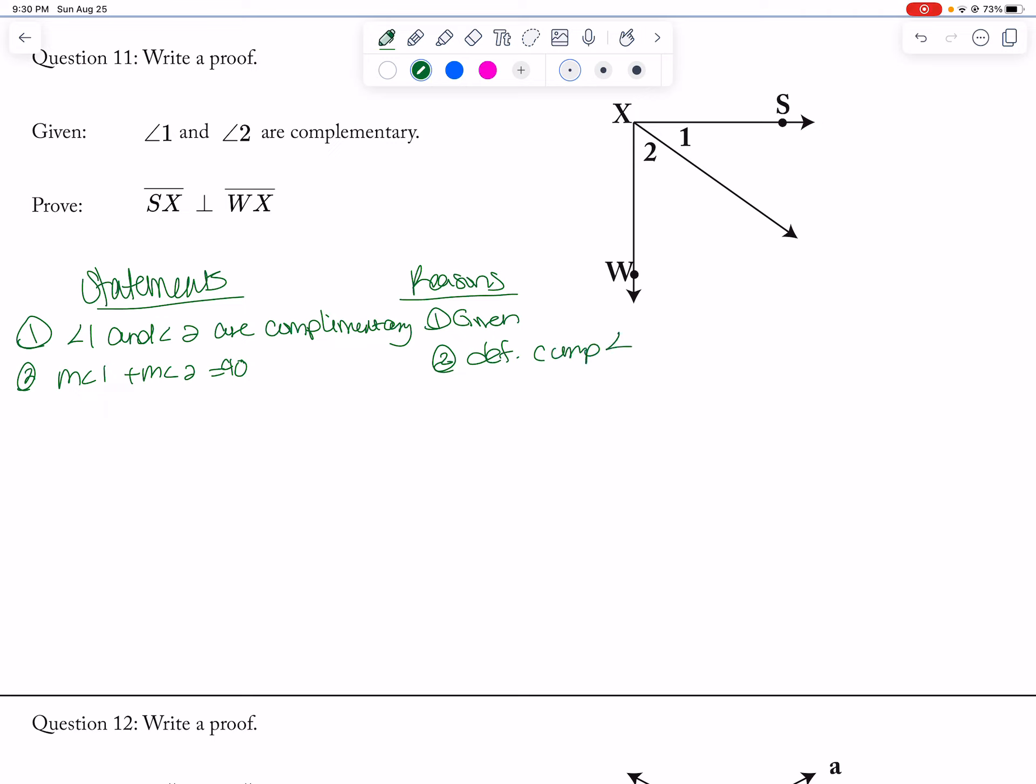And then 3: measure of angle 1 plus measure of angle 2, and that is angle addition postulate. And then 4: measure of angle WXS is equal to 90 degrees, so that is substitution.